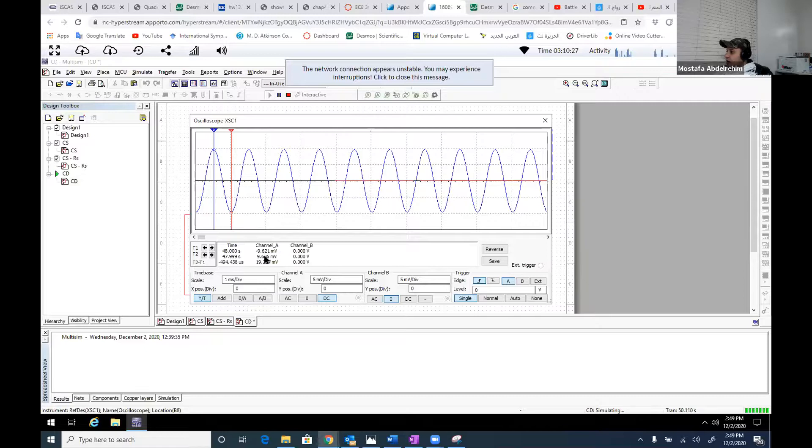So let's do the calculation, 19.257 over 19.96, it's 0.96 exactly, like the number that we get from our analysis. So this is basically all the stuff for common drain, and we're gonna go now to the last configuration we have, which is the common gate amplifier.